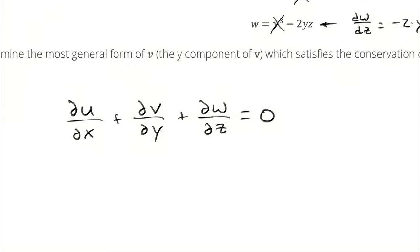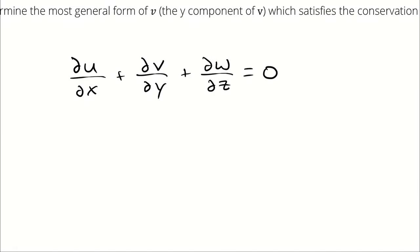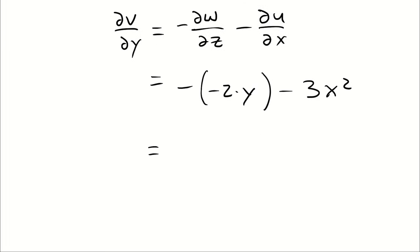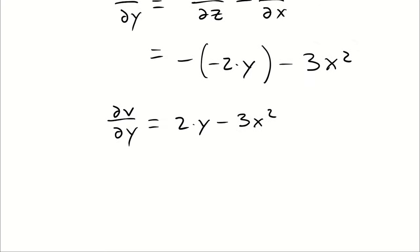When I plug those into this relationship, I can solve for the partial derivative of v with respect to y, at which point I just have 2y minus 3x squared. And that's the derivative of v with respect to y. That is not the v, it is not the y component of velocity.